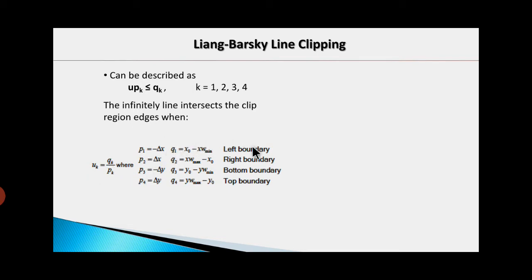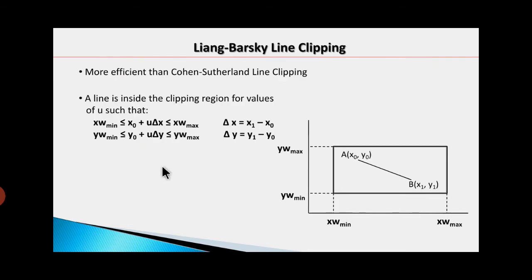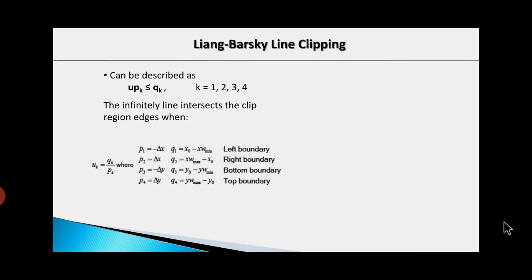We define the parameter u for every boundary in terms of p and q. For the left boundary, p1 = -delta_x and q1 = x0 - x_wmin. For the right boundary, p2 = delta_x and q2 = x_wmax - x0. For the bottom boundary, p3 = -delta_y and q3 = y0 - y_wmin. For the top boundary, p4 = delta_y and q4 = y_wmax - y0. In this way we can calculate u using q/p for all four clipping boundaries.